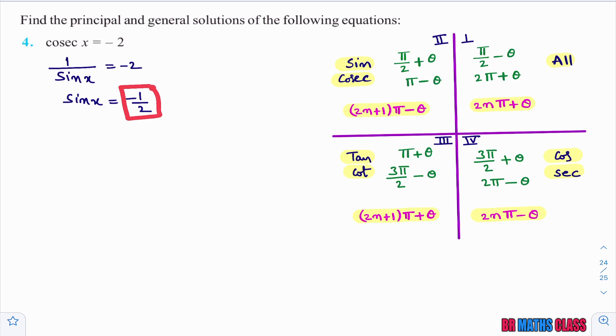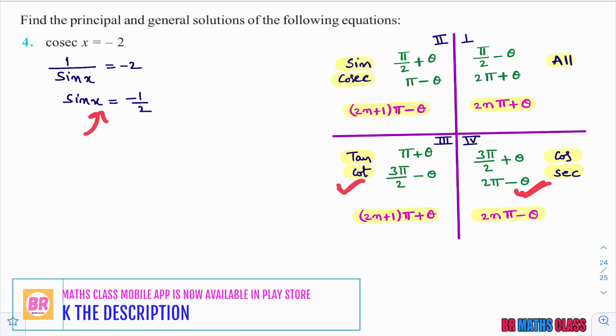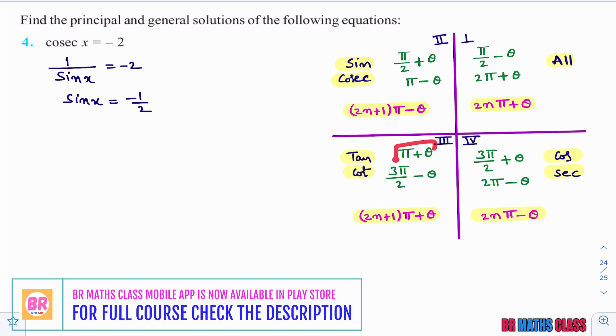You observe here sine x is negative. Sine x is negative in which quadrant? Sine x is negative in third quadrant as well as fourth quadrant. So the x values we will find in third quadrant and fourth quadrant. I always prefer which is having pi: pi plus theta, 2pi minus theta. I will prefer to find x values here.